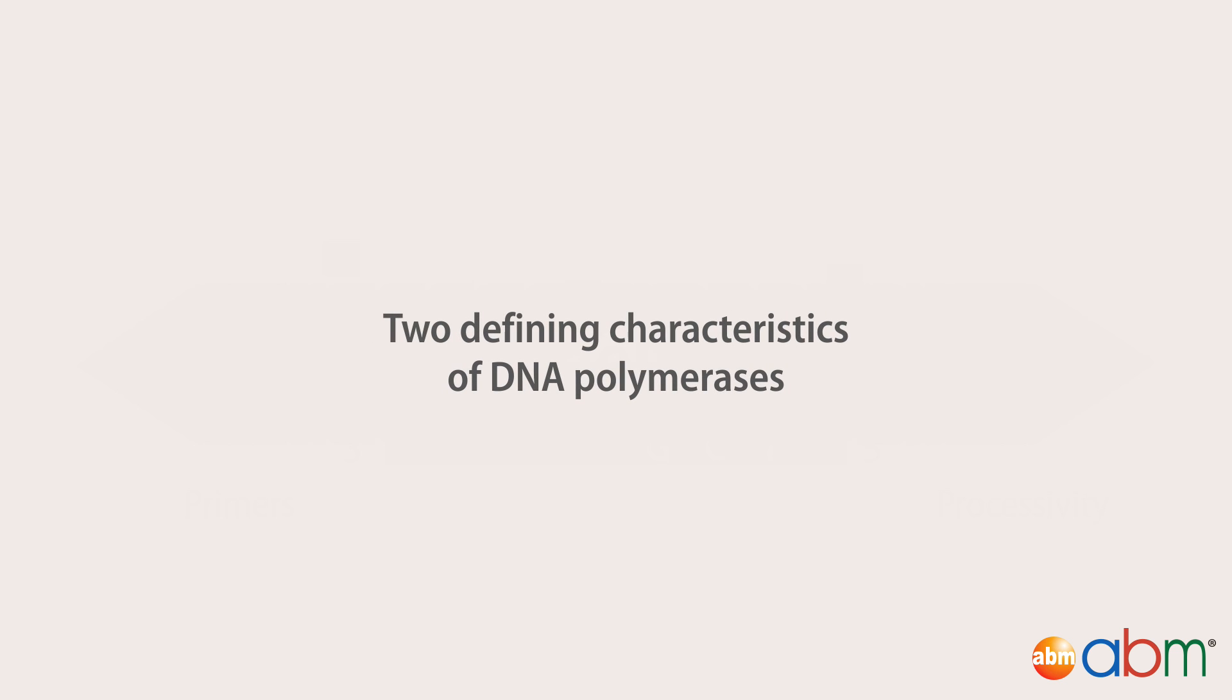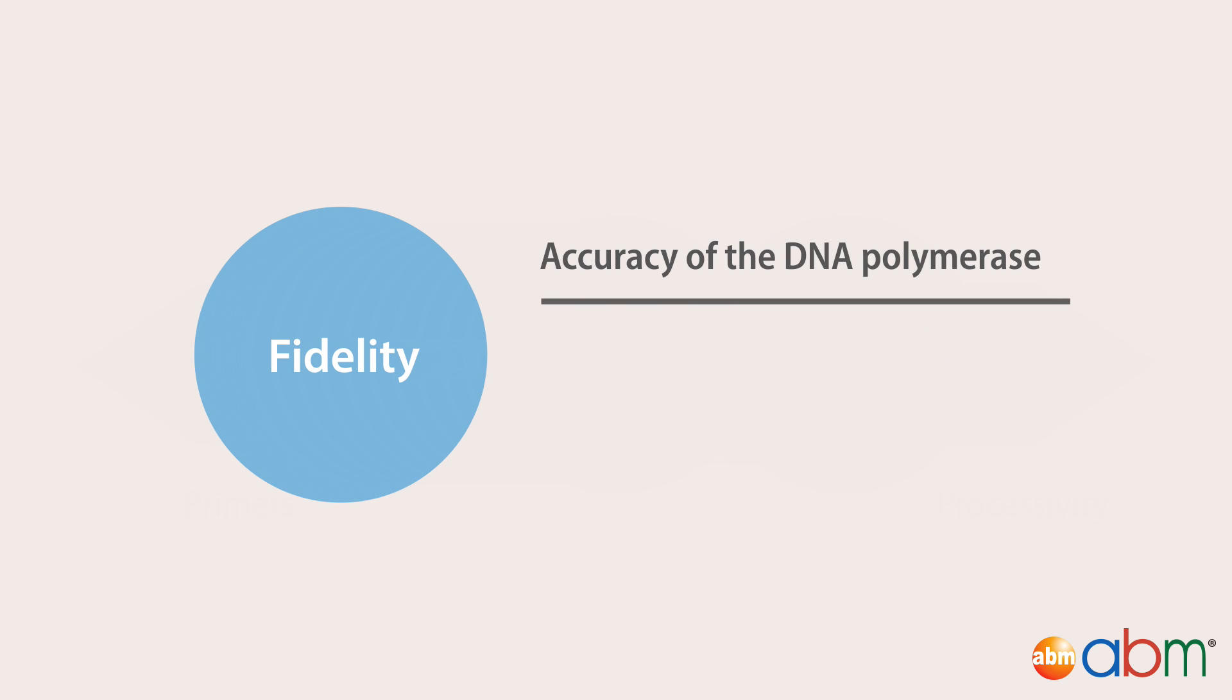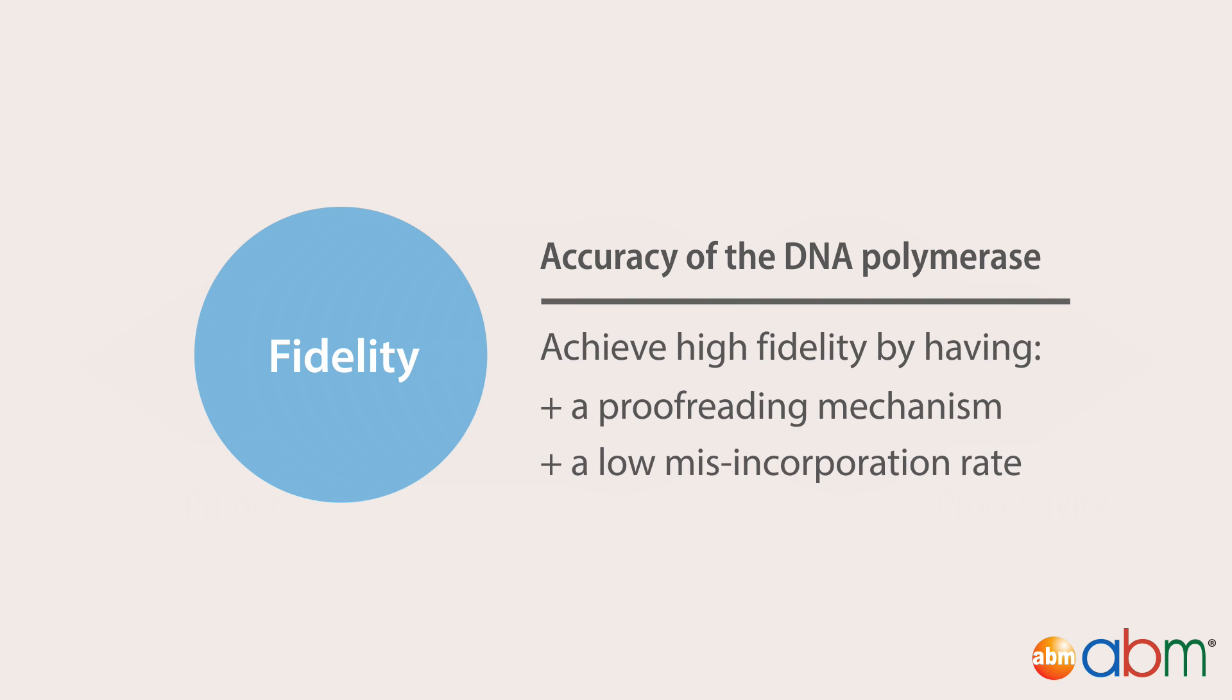There are two characteristics that define a polymerase: fidelity and processivity. Fidelity refers to the accuracy of the DNA polymerase during replication of the amplicon. High fidelity is achieved by having a proofreading mechanism and a low misincorporation rate.